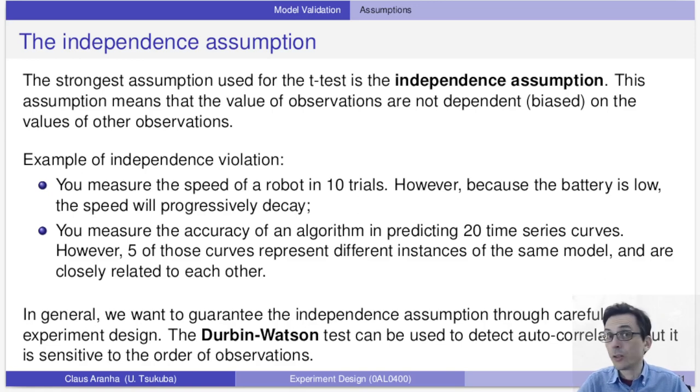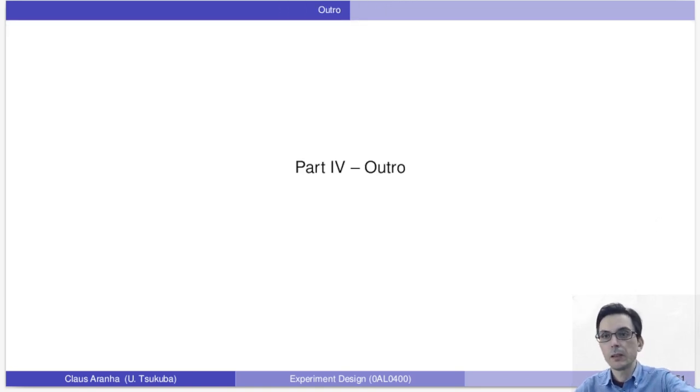So in general it's not possible to guarantee or even test independence purely by mathematical tests. We have the Durbin-Watson test that can detect a time-related dependence such as the robot example, but this test does not work if the dependence is not time-dependent or if the order of the observations is scrambled. So in practice we need to design our experiment carefully to remove any factors that would violate the independence assumption.